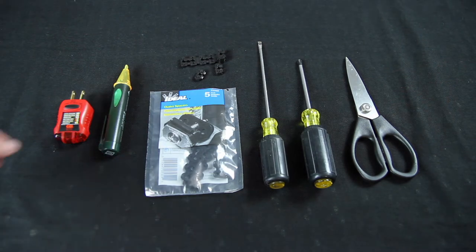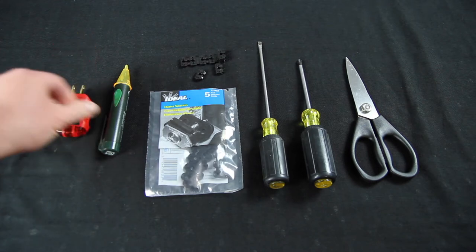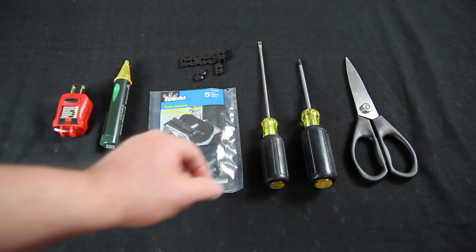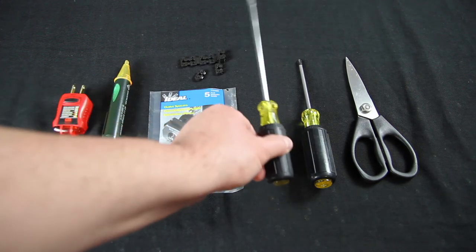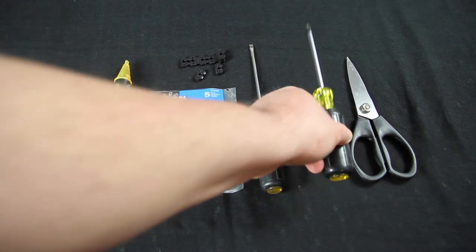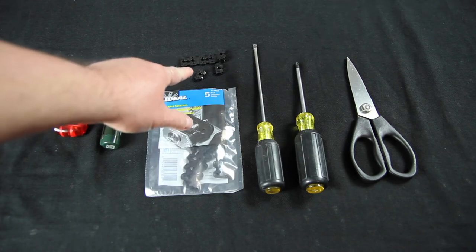Next thing we're going to need is an electric tester just to verify that we do have the correct circuit turned off. And then you're going to need a flat blade screwdriver to take the cover plate off. Then we're going to need a Phillips and then a pair of scissors just to trim the spacers.